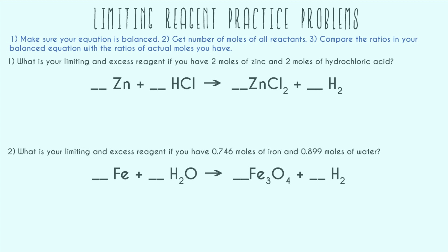We're going to start with some examples that go a little bit faster, and then our third example is going to be a little bit more involved. So number one: what is your limiting and excess reagent if you have two moles of zinc and two moles of hydrochloric acid? Step one, we have to make sure we're balanced, so I'm going to go ahead and put a two here. Now on each side, I have one zinc, two hydrogens, and two chlorines — completely balanced.